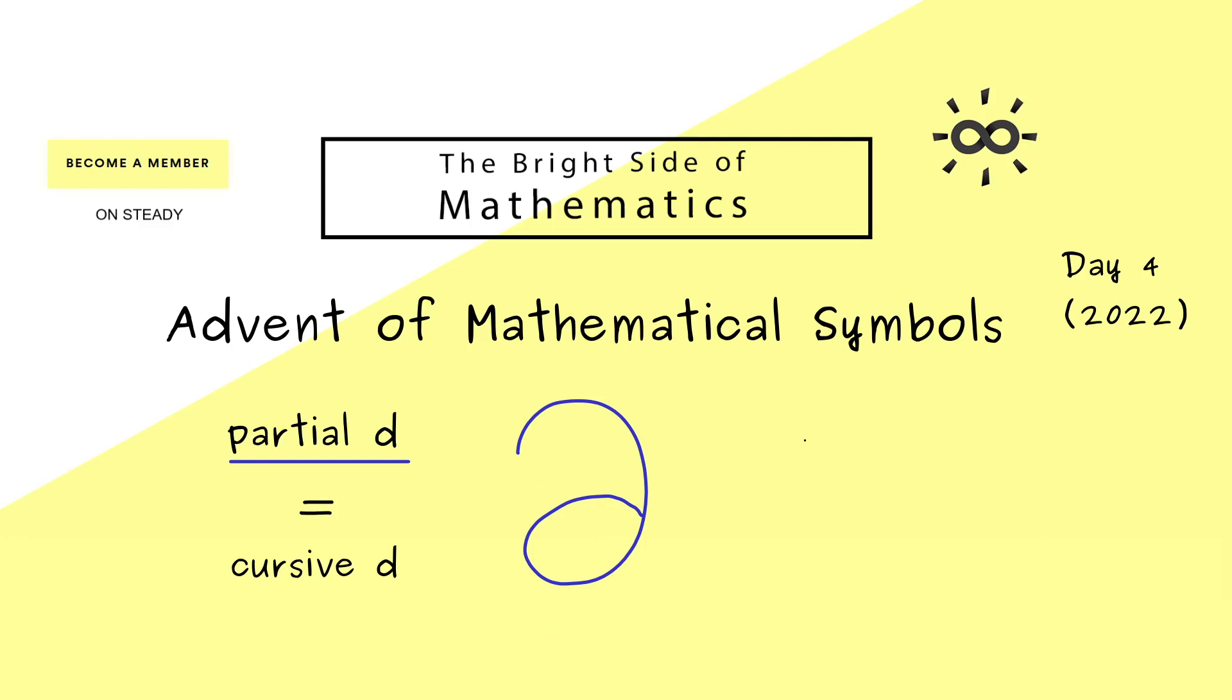And now you might already know, we mostly use this symbol when we talk about partial derivatives. So for example, if we have a function from R² to R, we can form the derivative with respect to the first variable here. And this is then the partial derivative denoted with the curve d.